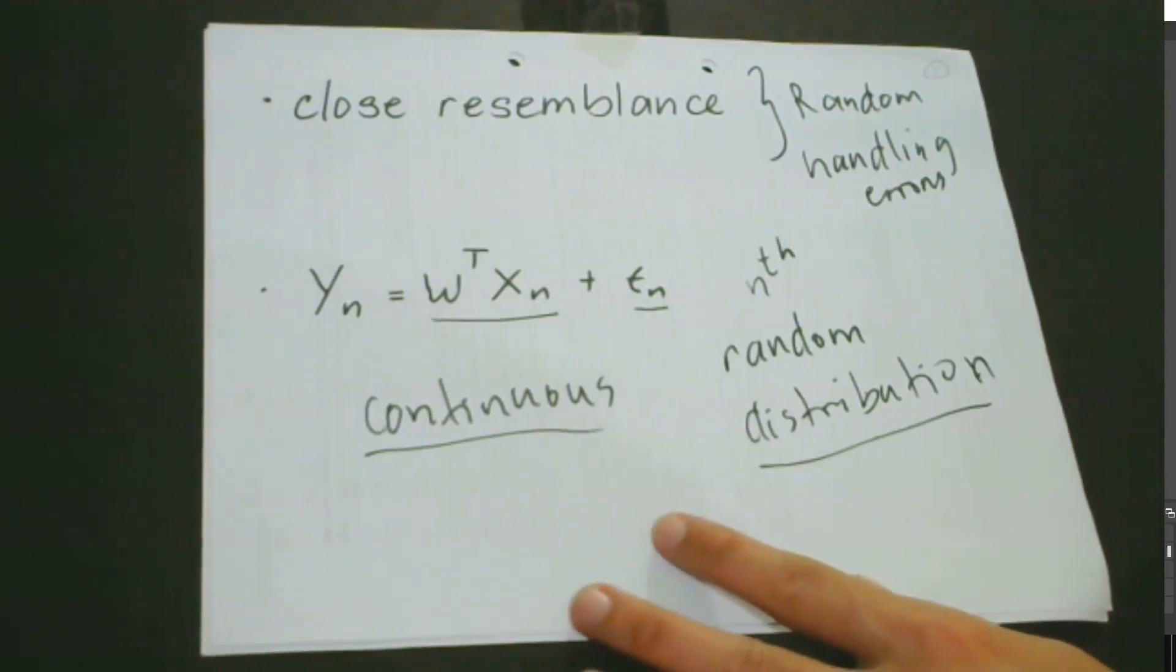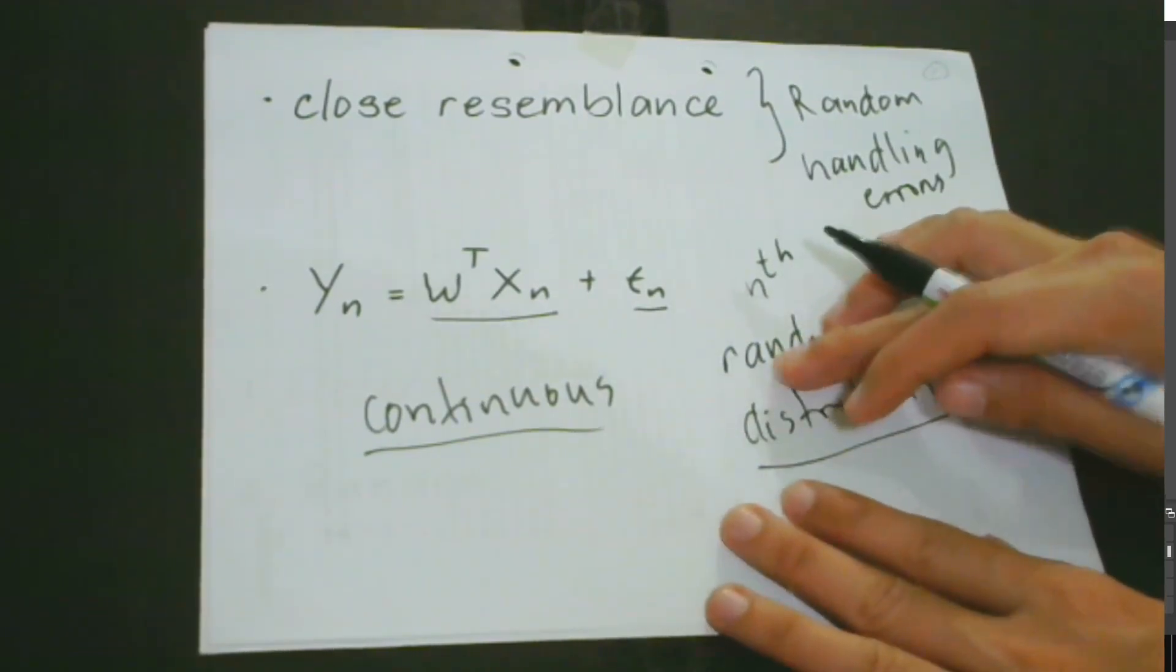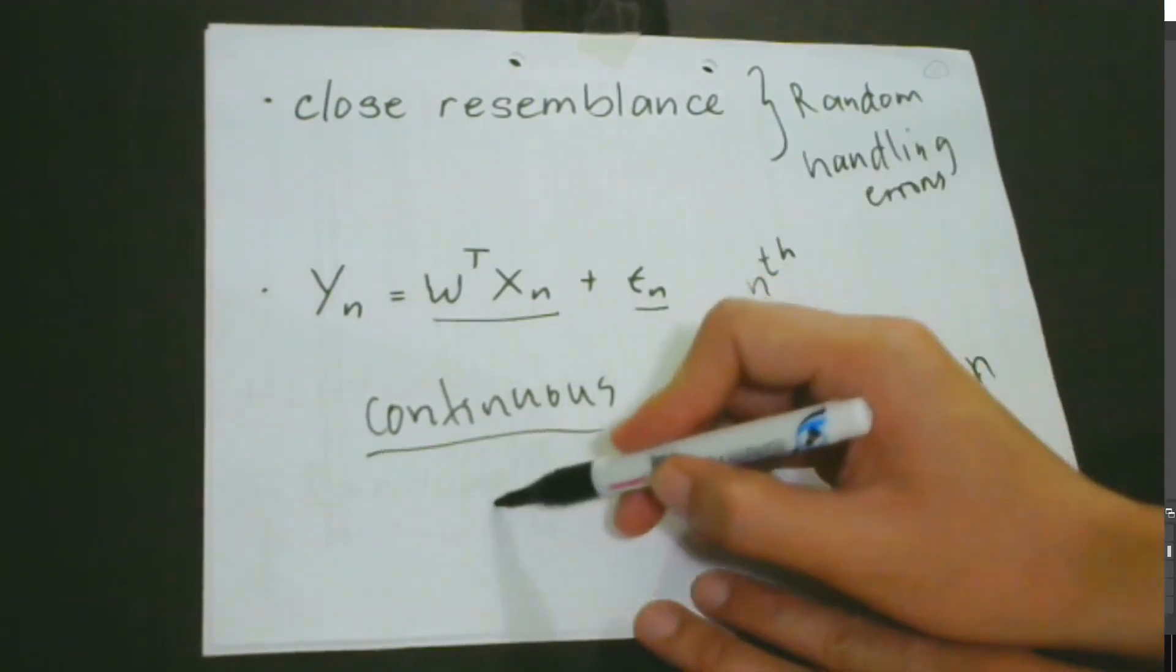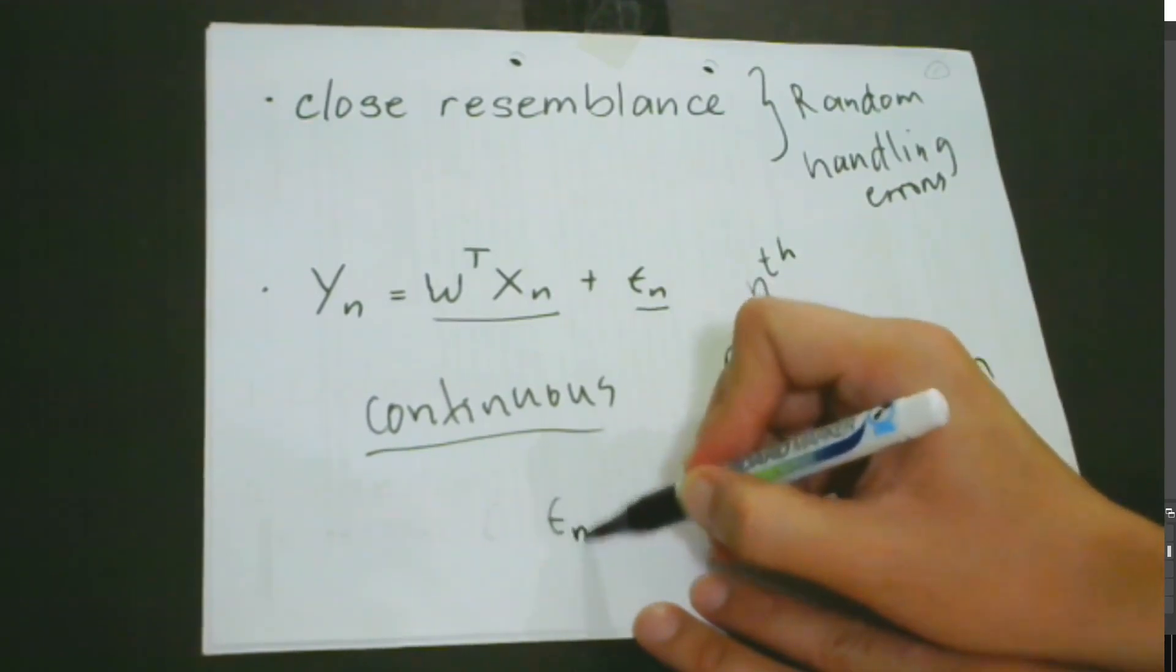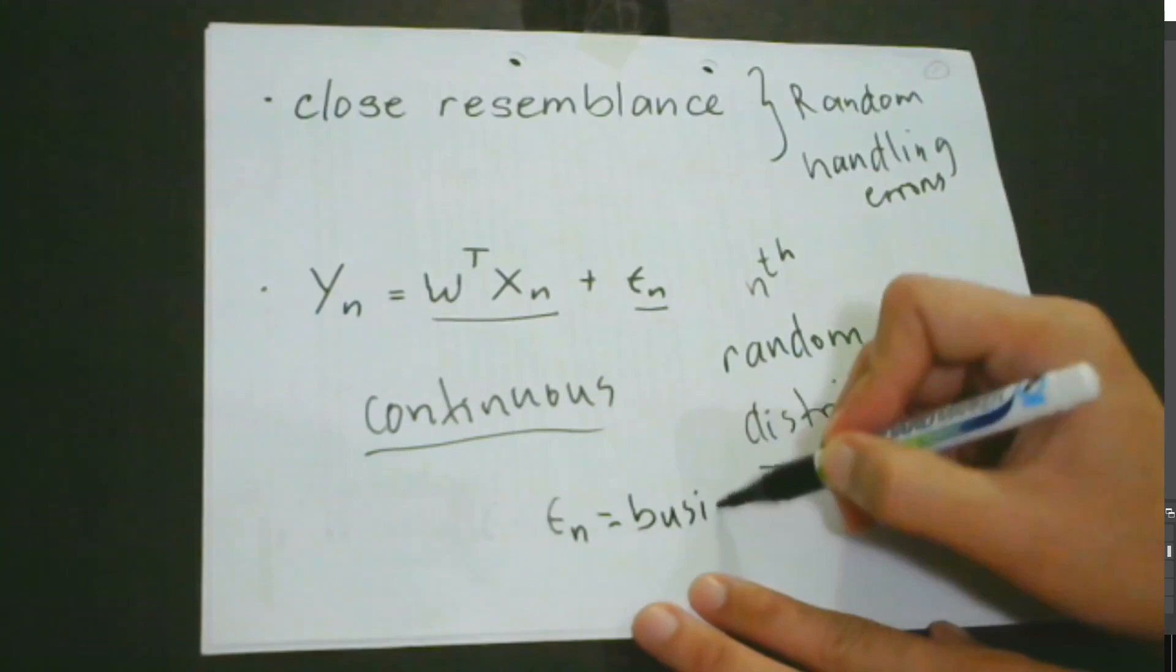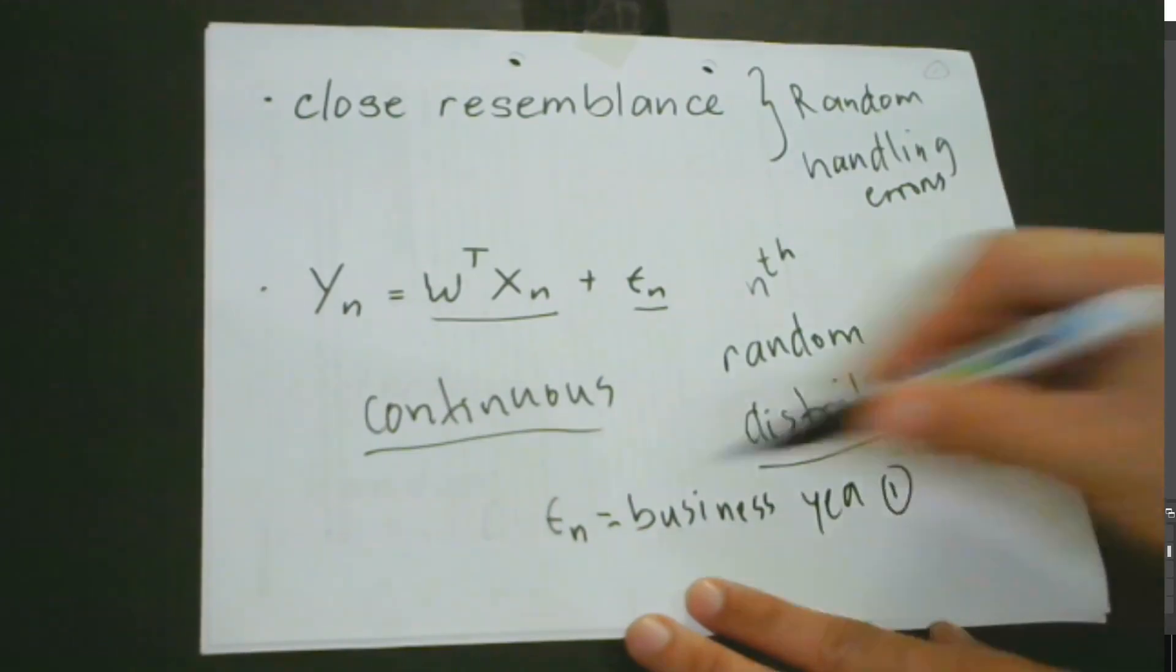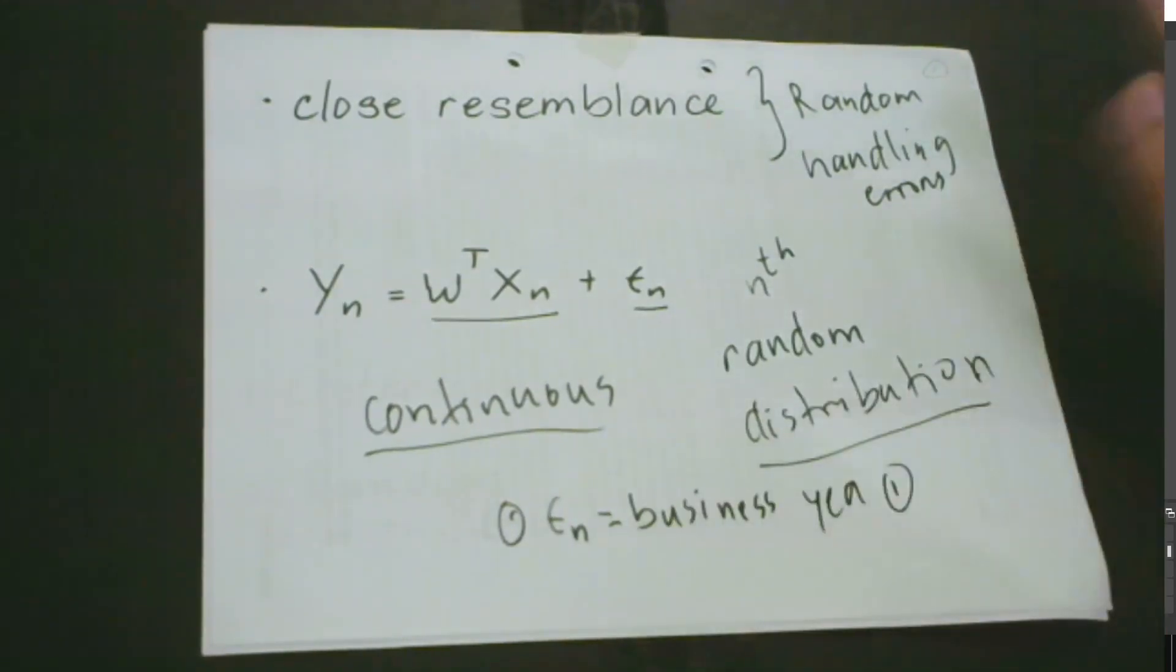What makes this even more interesting is the fact that one random variable is assigned to each business year. So that means for each business year, we have assigned a random variable.